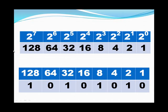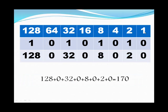Now we do the same thing as decimal. 128 times 1 is 128. 64 times 0 is 0. 32 times 1 is 32. 16 times 0 is 0. 8 times 1 is 8. 4 times 0 is 0. 2 times 1 is 2. 1 times 0 is 0. Add them all up: 128 plus 32 plus 8 plus 2 equals 170. Use your calculator to verify. That's binary — if you still have problems with it, you'll be able to add these all up.